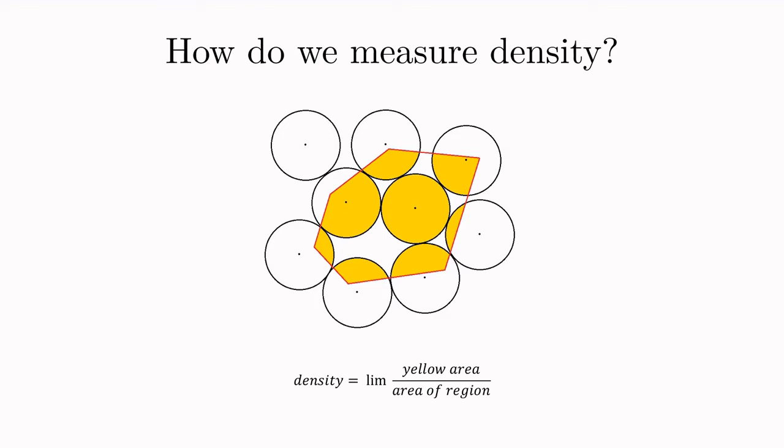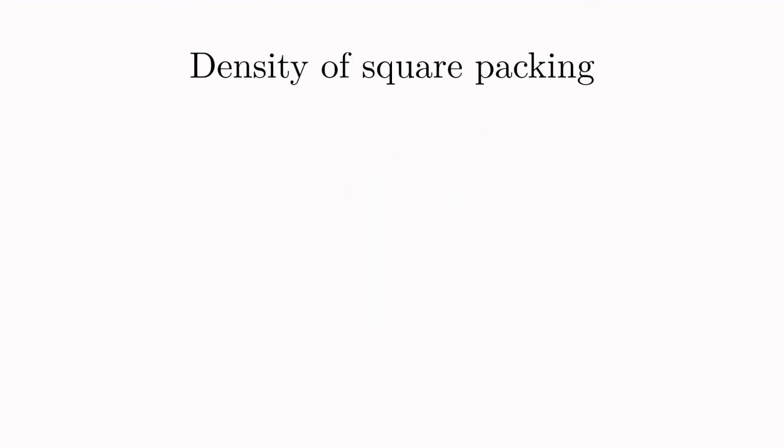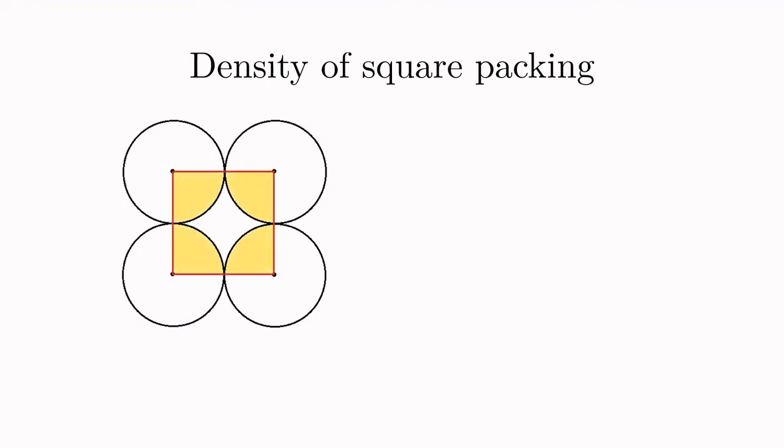If our packing is periodic in the sense that it repeats itself then that's actually a really nice shortcut to help us compute this number. As a first concrete example let's look at what's called the square packing. It looks like this. Now we can draw in some finite boundary region like this one. We can observe that the infinite plane is tiled by infinitely many copies of this square. This allows us to conclude that the density of the infinite packing is in fact just the density inside the red region which turns out to be the area of one full circle divided by the area of a square of side length 2. Since we're dealing with unit circles this pens out to be pi over 4 or 78.5 percent.